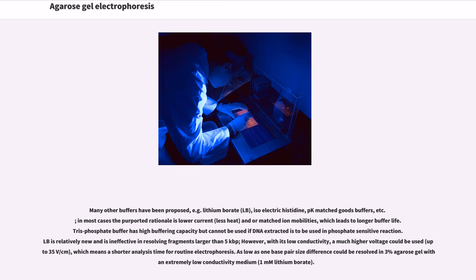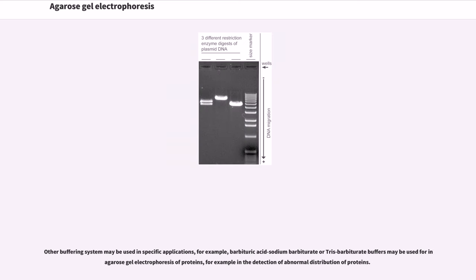Many other buffers have been proposed, for example lithium borate, sodium borate (SB), isoelectric histidine, and pH-matched Good's buffers. In most cases the purported rationale is lower current, less heat, and/or matched ion mobilities, which leads to longer buffer life. Tris-phosphate buffer has high buffering capacity but cannot be used if DNA extracted is to be used in phosphate-sensitive reactions. Sodium borate is relatively new and is ineffective in resolving fragments larger than 5 kbp; however, with its low conductivity, a much higher voltage of up to 35 V/cm could be used, which means a shorter analysis time for routine electrophoresis. As low as one base pair size difference could be resolved in 3% agarose gel with an extremely low conductivity medium, 1M lithium borate.